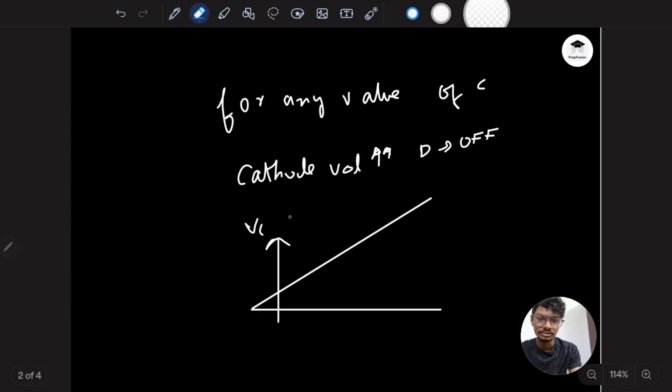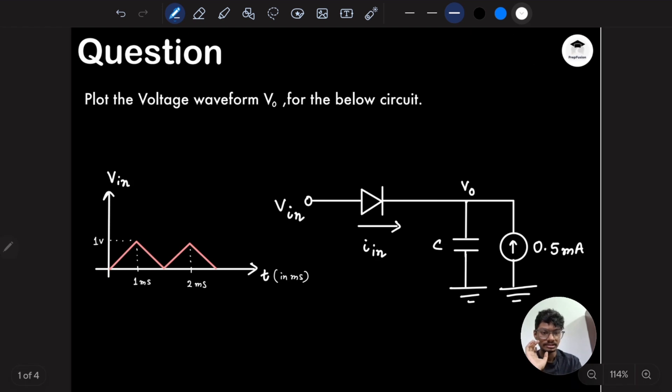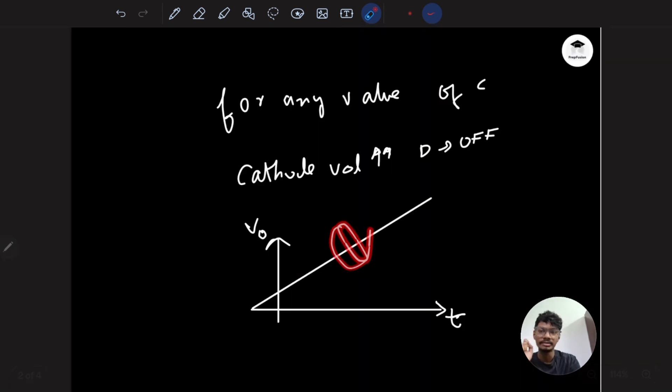The interesting fact for this question is if I change this to something else. Instead of it being a 0.5 milliamp current source, I will change this to 0.5 milliamps u(t) - I will multiply a u(t) as well. Now things will be different - the output voltage waveform will depend on the value of C as well.